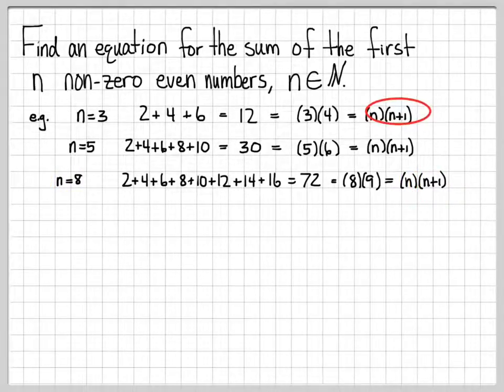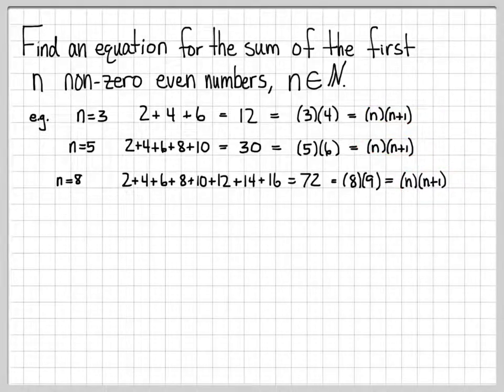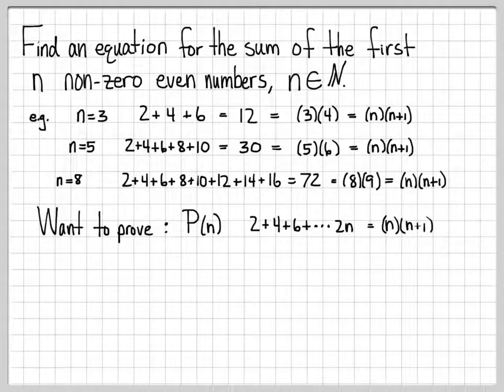In all these cases, it looks like the pattern we are looking for when we add up the first n non-zero even numbers is that we should be able to write that as n times n plus 1 for arbitrary n. That's what the pattern looks like. That's our guess. To actually prove this now, we need to use mathematical induction. What we're really wanting to prove is the statement P of n, a function of n for n being an integer.